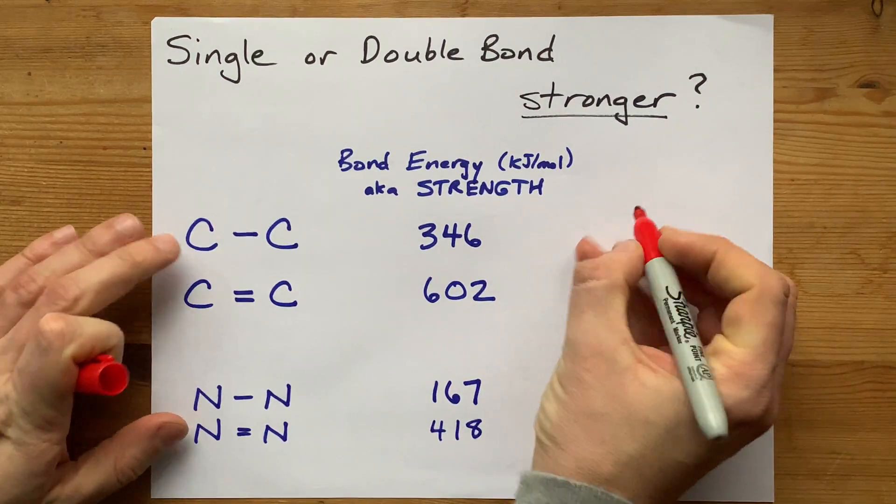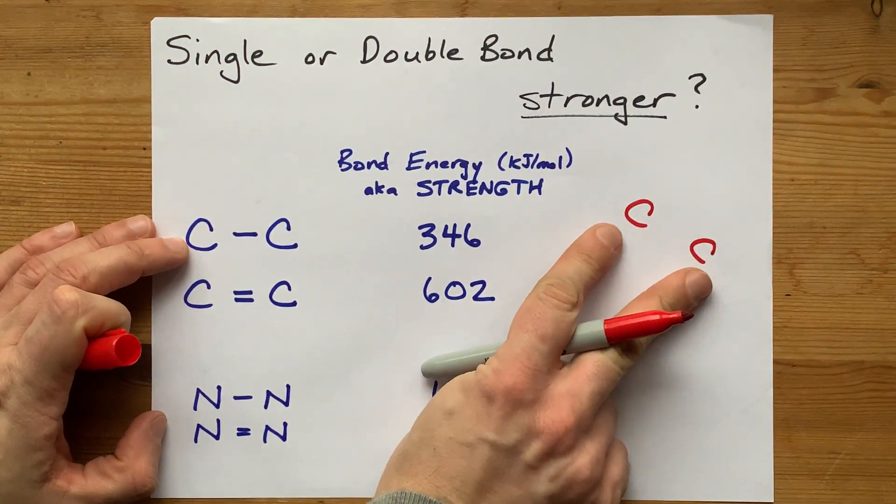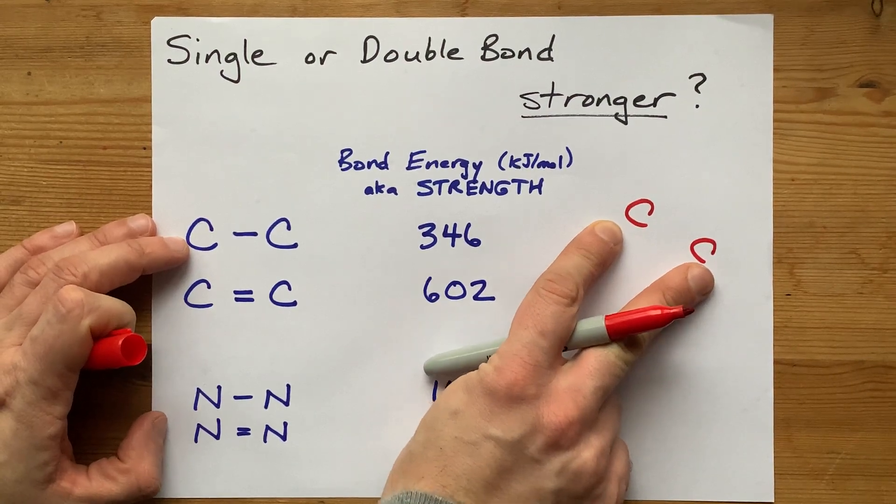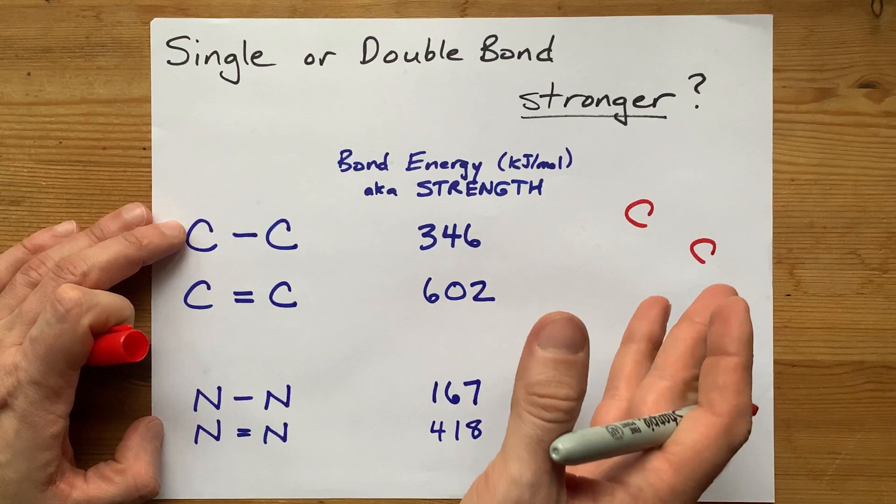Let's think for just a minute about why that's the case. You have two atoms. At the center of each is a nucleus. In the case of carbon, it's six protons, usually six neutrons.